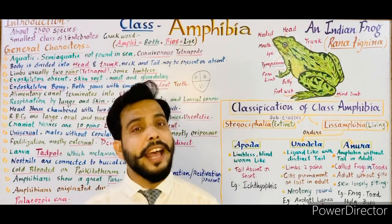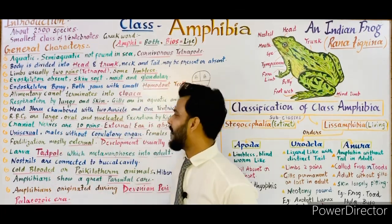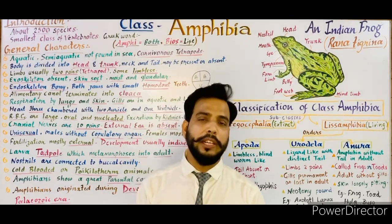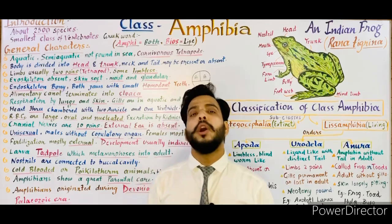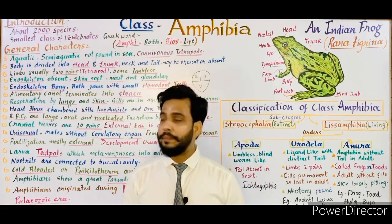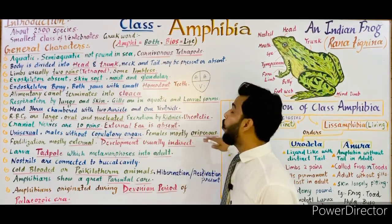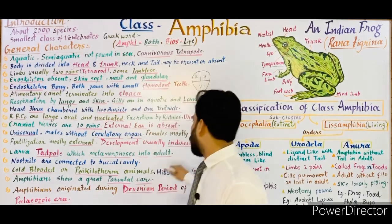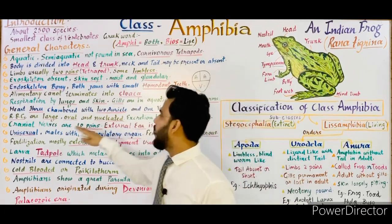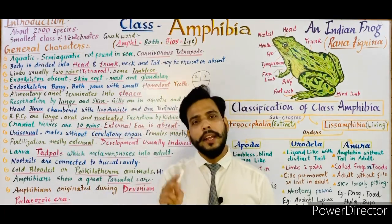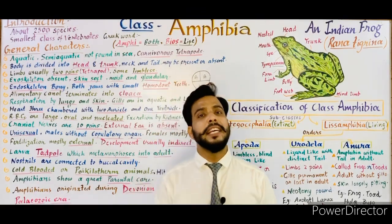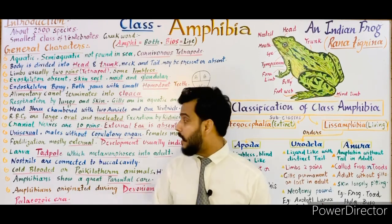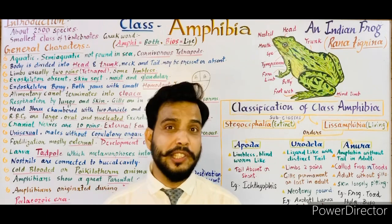Amphibians are unisexual — the sexes are separate, with distinct males and females. Males do not have a copulatory organ; they release sperm in the water and females release their ova, so fertilization takes place externally in water. Females are mostly oviparous — they lay eggs — though exceptionally they may be viviparous. Fertilization is mostly external.